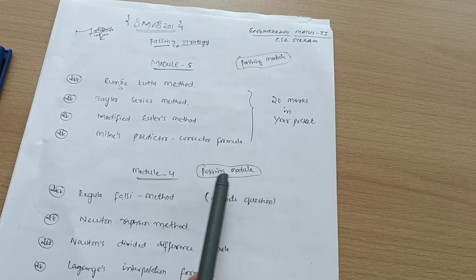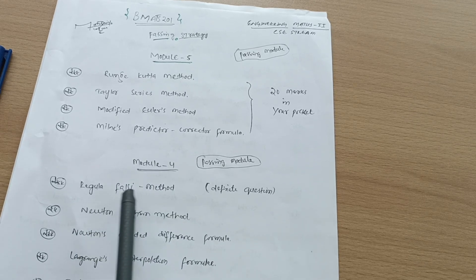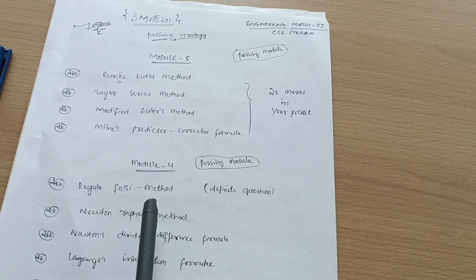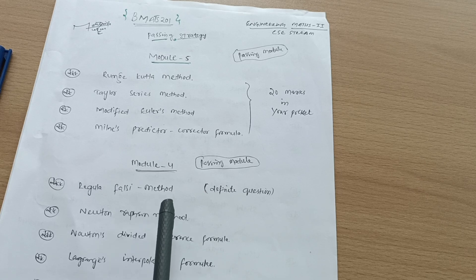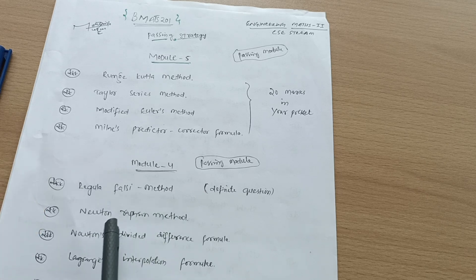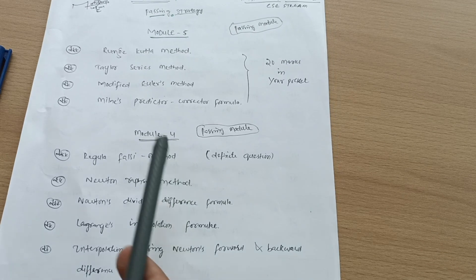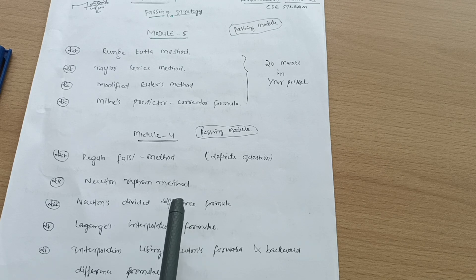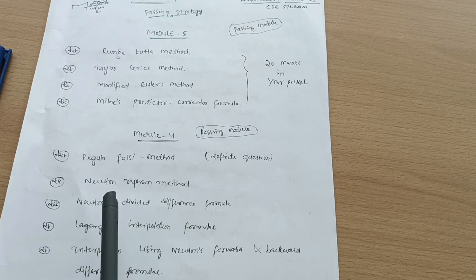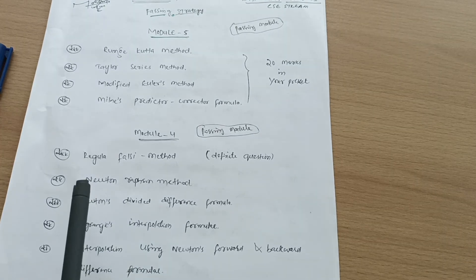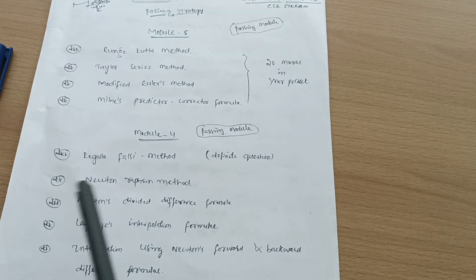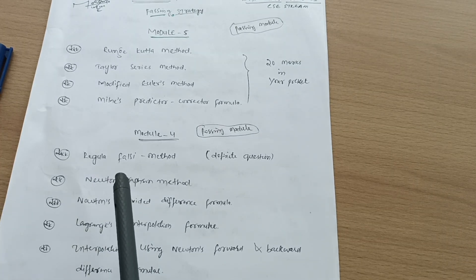Next is Module 4, which is again a passing module. Here you have to cover the Regula Falsi method — a definite question will be on this method. Equations will be given and you have to solve accordingly. Next is the Newton-Raphson method — equations will be given and you have to solve using that method. As mentioned earlier, the data handbook will have the formulas, so you just need to use them and solve the questions.